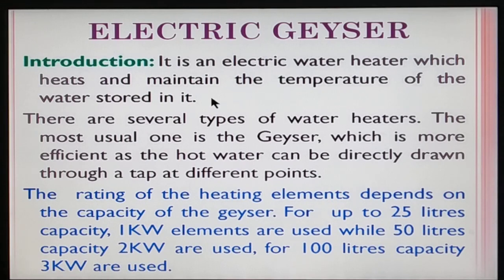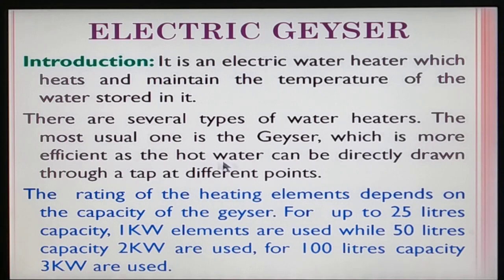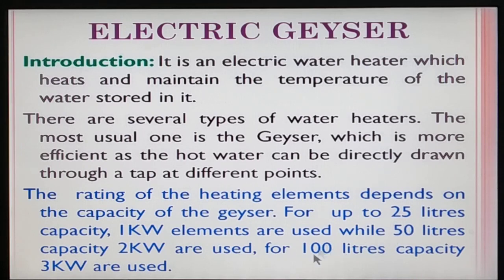The instant geyser heats water immediately when the supply is on. In the storage geyser, hot water can be directly drawn and heat is stored at the top. There are different wattages and capacities: up to 25 liters is 1 kilowatt, 50 liters is 2 kilowatt, and 100 liters is 3 kilowatt coil capacity.